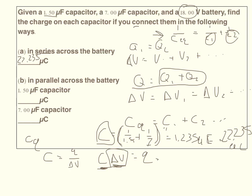So part 2 is actually a little bit easier, because we have this property that the total delta V is equal to delta V on each of the capacitors. So we're already given the capacitance, so we can take the capacitance of 1.5 times delta V, which is 1.5 times 18, you should get 27. And then you could take 7 times 18, and you should get 126.